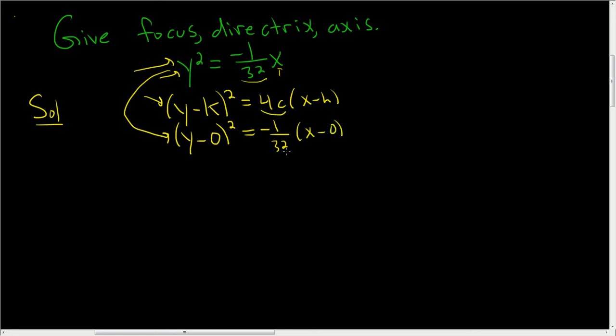So you see that 4c has to be equal to -1/32. So in these problems, usually what you do is you say, oh look, this vertex is (0, 0). So you just take this and you set it equal to 4c. So 4c is -1/32. So multiply by 1/4, and c is -1/128.